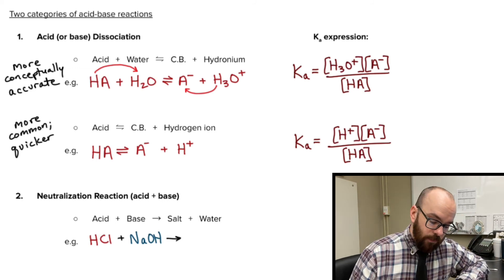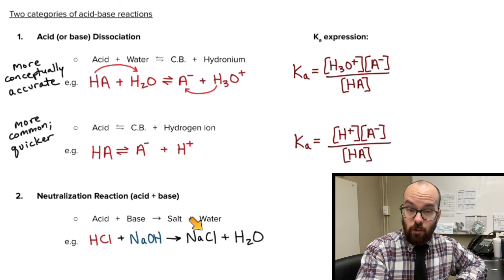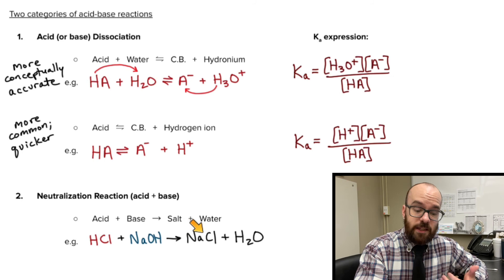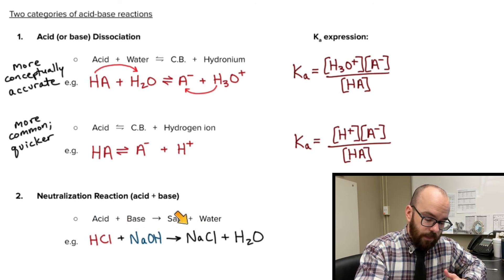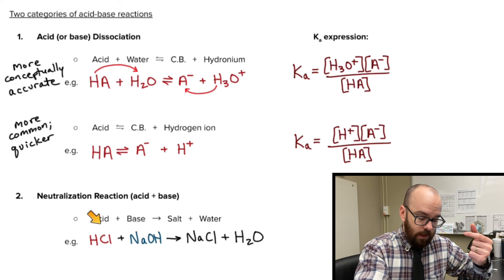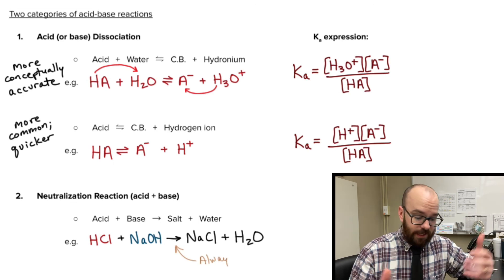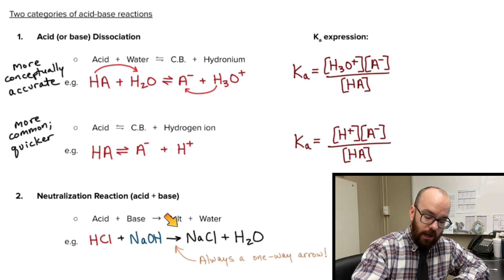And the products that they'll form is salt and water. In this case, we're going to form sodium chloride, which is table salt. But it could be any salt, depending on what these acids are over here. And of course, it's going to form water. A hydrogen from the acid and a hydroxide from the base are going to come together to form H2O. And like I said, that always includes a one-way arrow.